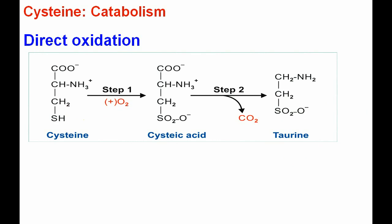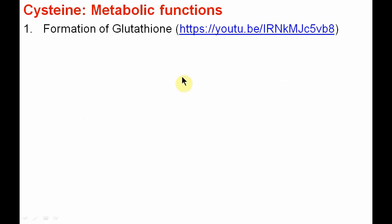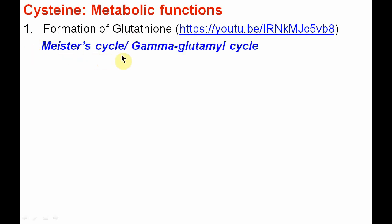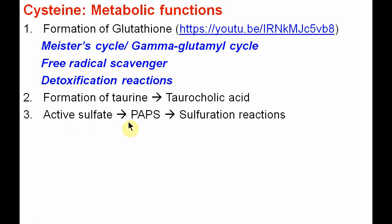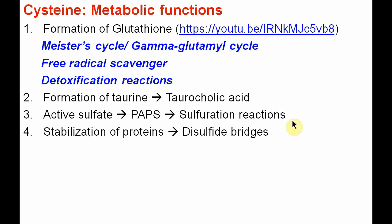The metabolic functions of cysteine include: first, formation of glutathione — an important antioxidant involved in the gamma-glutamyl cycle, free radical scavenging, and detoxification reactions. Second, formation of taurine, which helps in the formation of taurocholic acid. Third, active sulfate in the form of PAPS to undergo sulfation reactions. Fourth, stabilization of proteins through disulfide bridges.